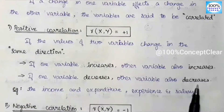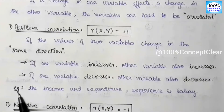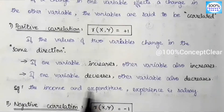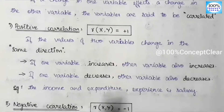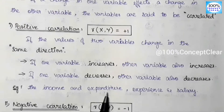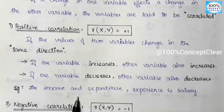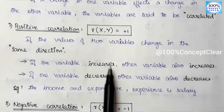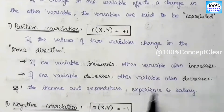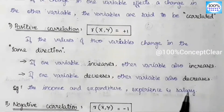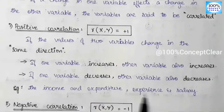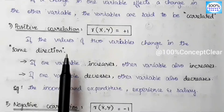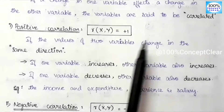Let's say positive correlation. Here is an example: income and expenditure. If income is more, expenditure is more. If we get less income, we get less expenditure — so this is positive correlation. Another example: experience and salary. If experience is more, salary is more; if experience is less, salary is less. The two variables move in the same direction — so this is positive correlation, and the positive correlation value is plus 1.